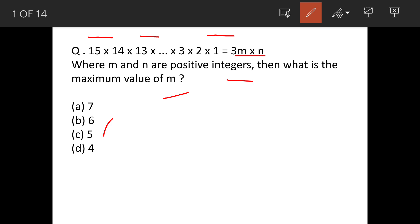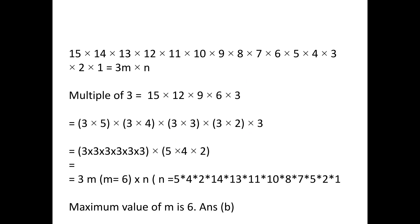In this question, what we have to do is find the multiples of 3 from 15 till 1. So multiples of 3 into their numbers is 3^m, and then the remaining numbers are n. This is what we have to do, so see the solution.